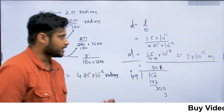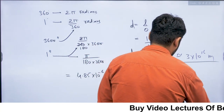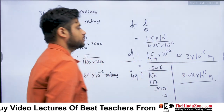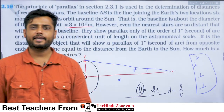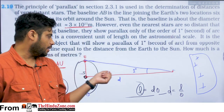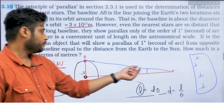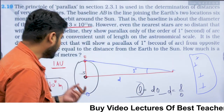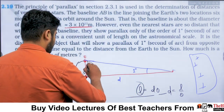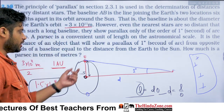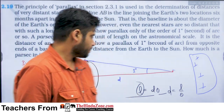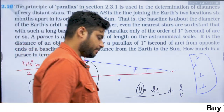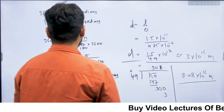So 1 parsec is the distance at which the average Earth-Sun separation subtends an angle of 1 arc second. The length at which that 1 arc second angle is formed — that distance is 1 parsec.